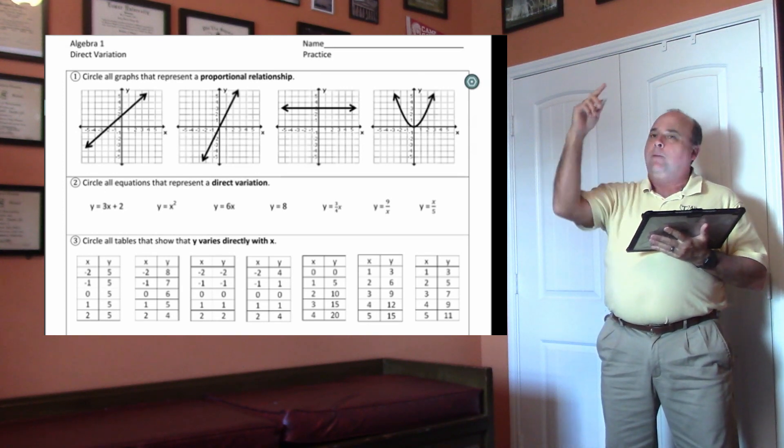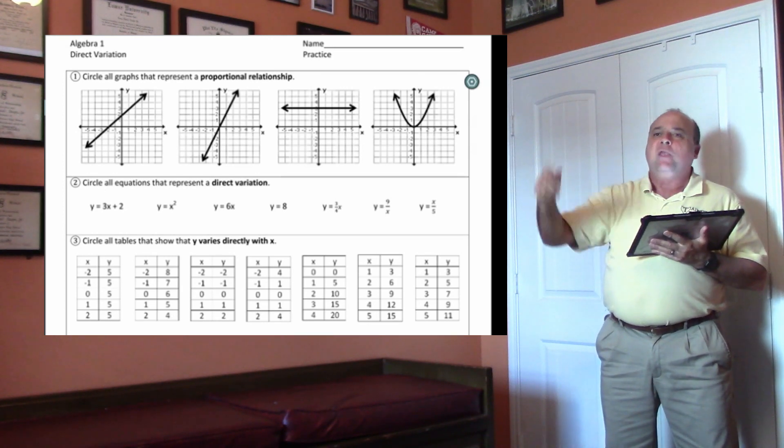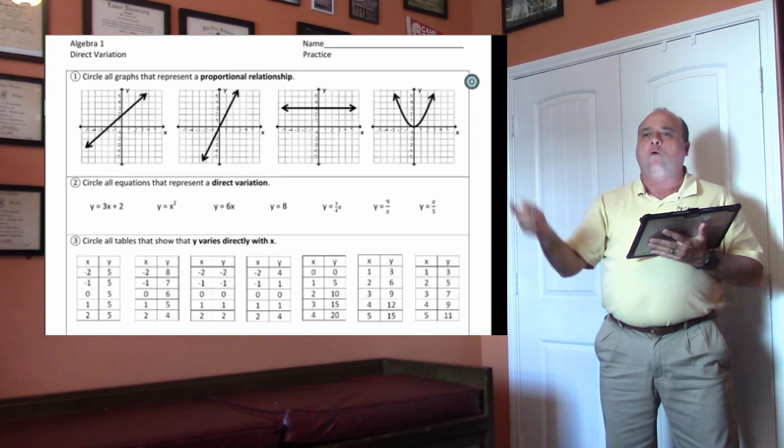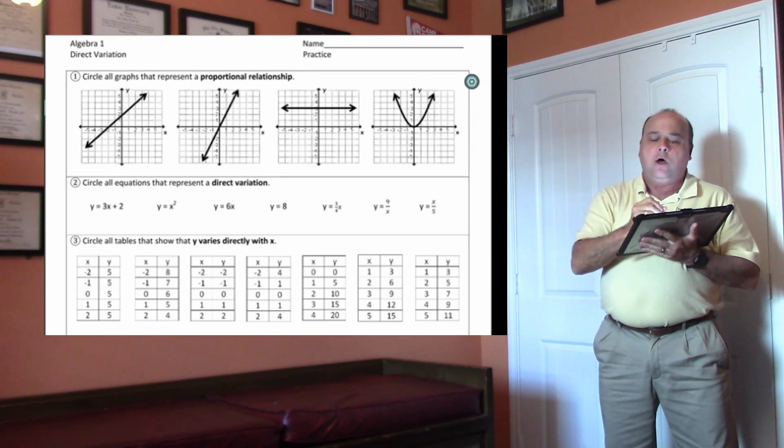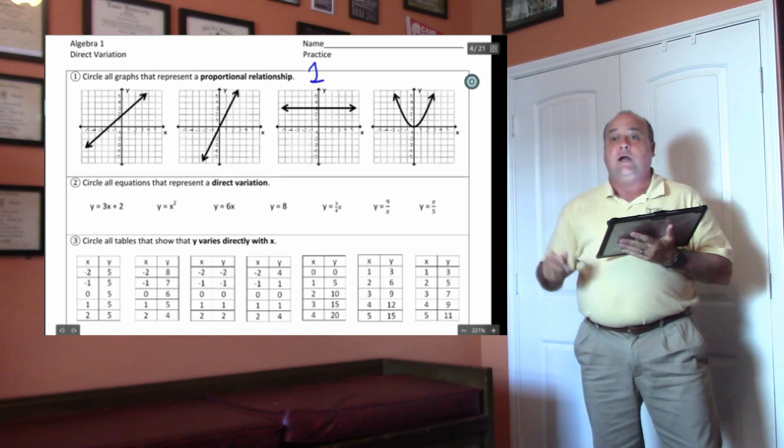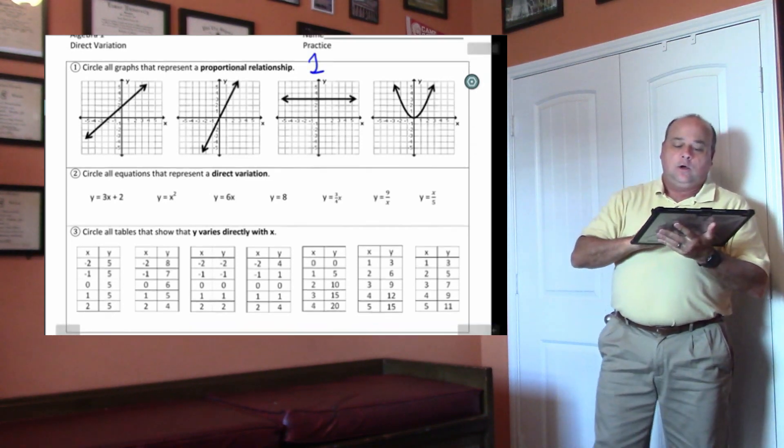On number one, remember this from junior high. A line must go through the origin to have direct variation, or be proportional. Only one of those works. I'm not going to tell you which one.